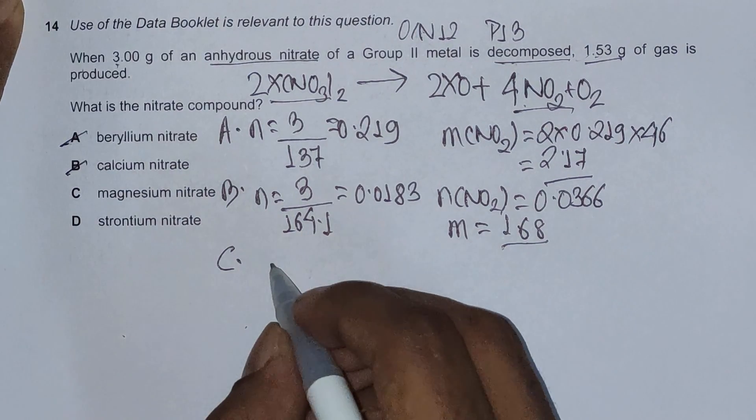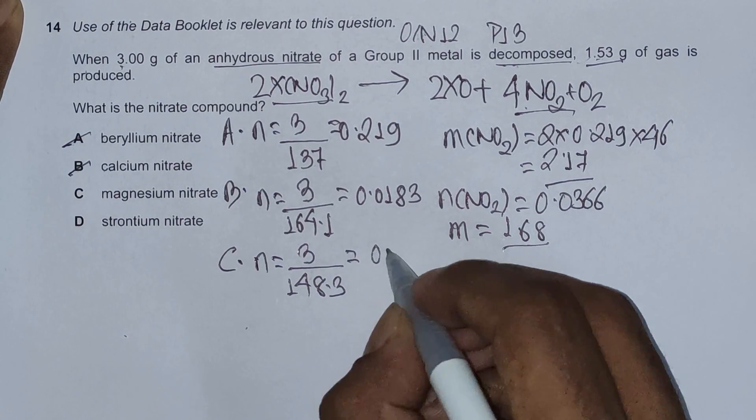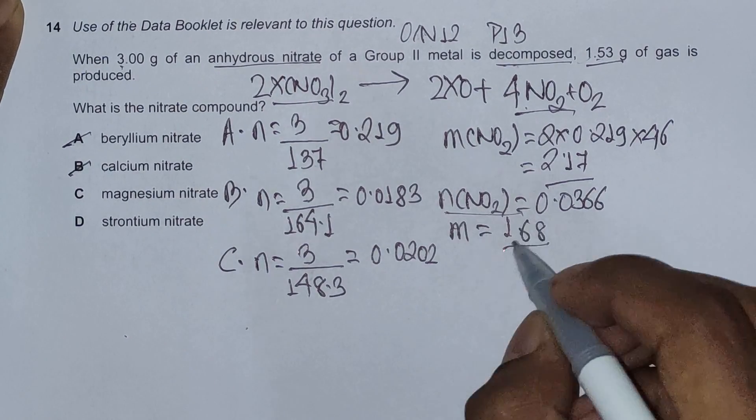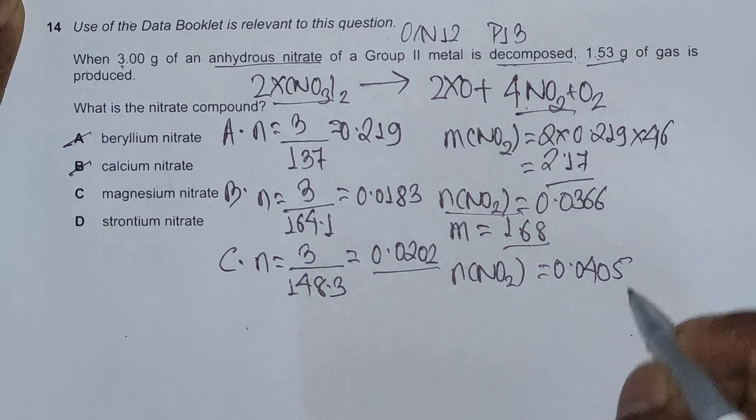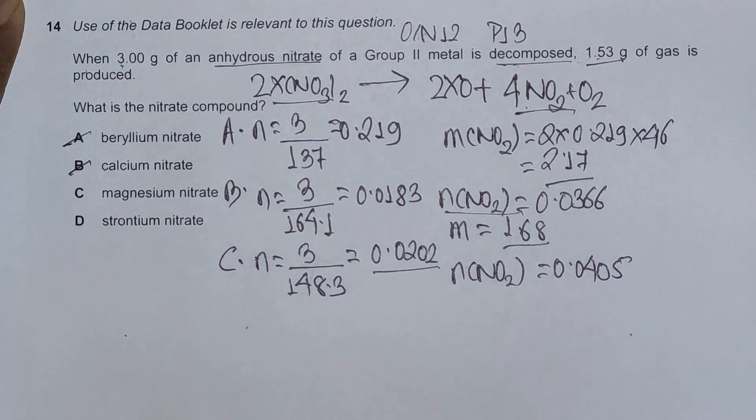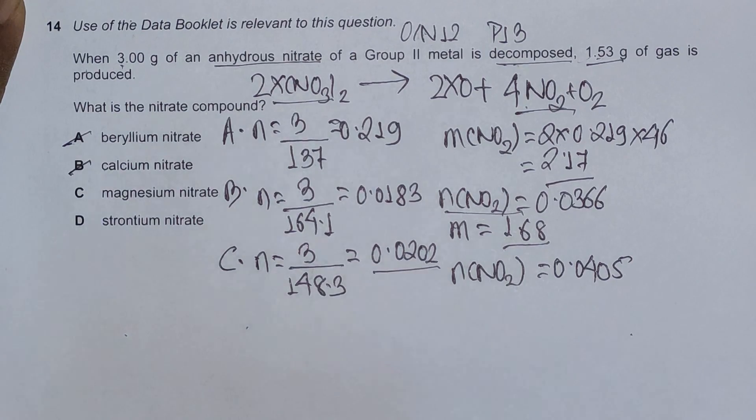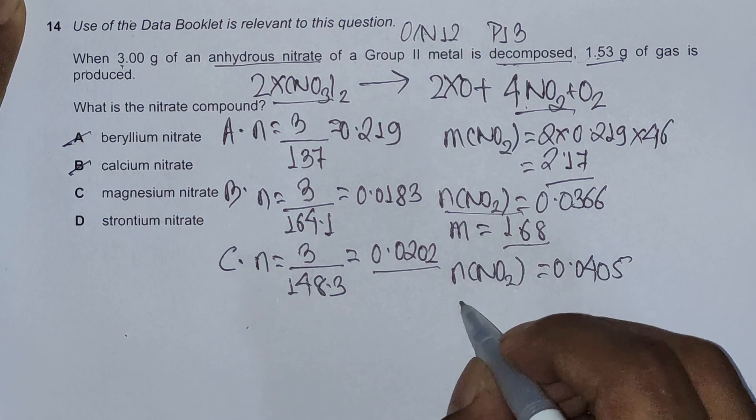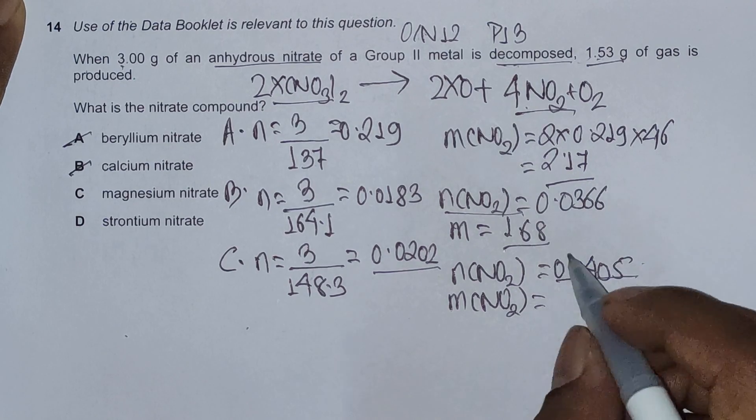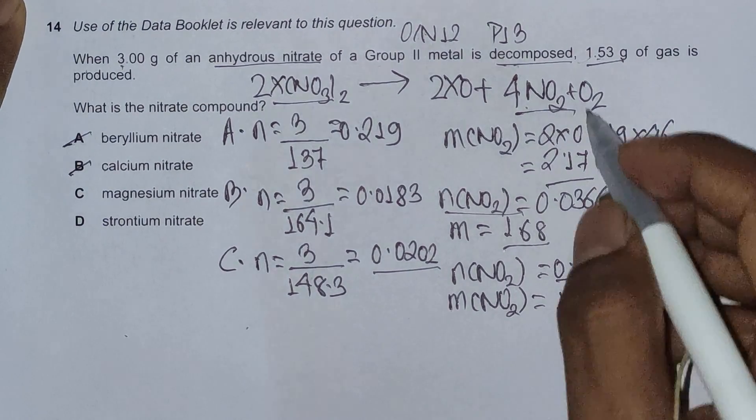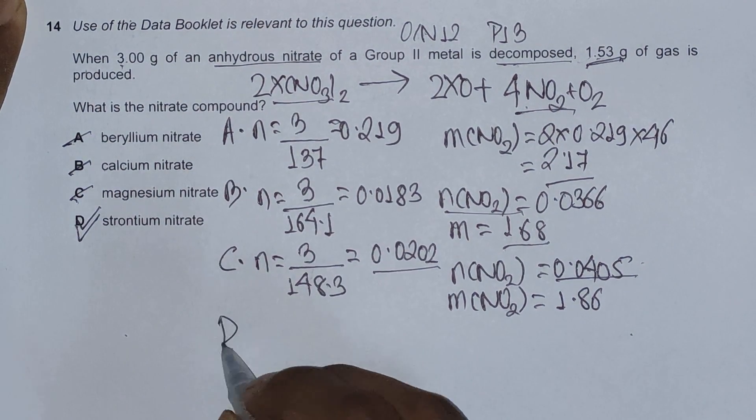Checking for option C, moles of magnesium nitrate is 3 divided by 148.3 which amounts to 0.0202. That means moles of NO2 is this multiplied by 2, which is 0.0405. If you think I am going really fast in calculations, I already have basic work solutions of the numerical problem so I am just copying from there, but you can check them if you want. Mass of nitrogen dioxide, 0.0405 multiplied by 46, would make this 1.86. Again exceeds 1.53, that means C cannot be the correct answer, which means D is the correct answer. But still we are going to check for it and verify.